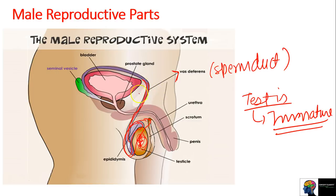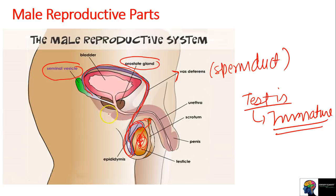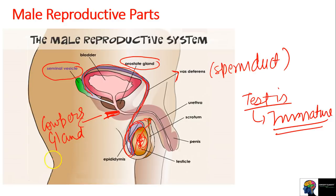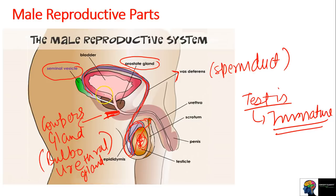There are three glands that help greatly in the movement of sperm. The first gland is the seminal vesicle. The second gland is the prostate gland. The third gland is called Cowper's gland - in many books it is also called bulbourethral gland. So there are three glands: prostate gland, seminal vesicle, and Cowper's gland.